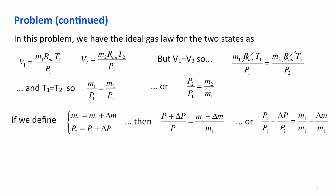Well, just with a little bit of simple mathematics, we can write this as 1 plus delta P over P1 is 1 plus delta M over M1.